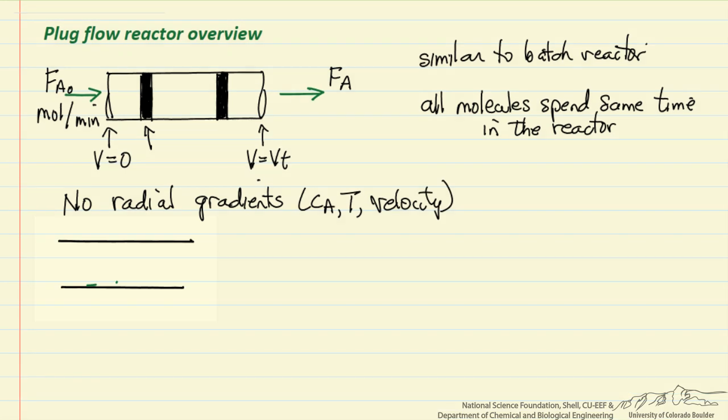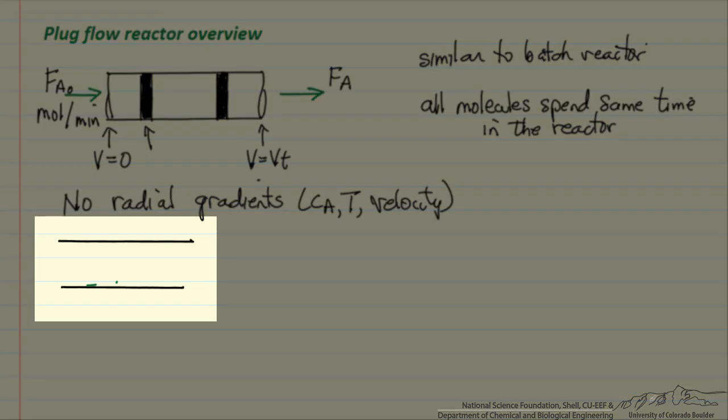So that means if we look at a plug flow reactor, the velocity near the wall, same as the velocity here, the same as here, and so we have a plug.